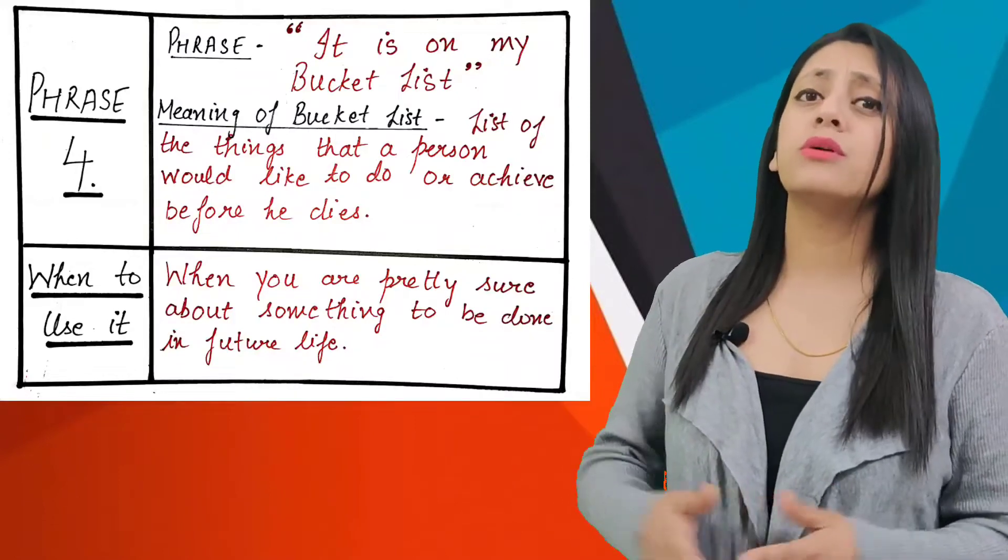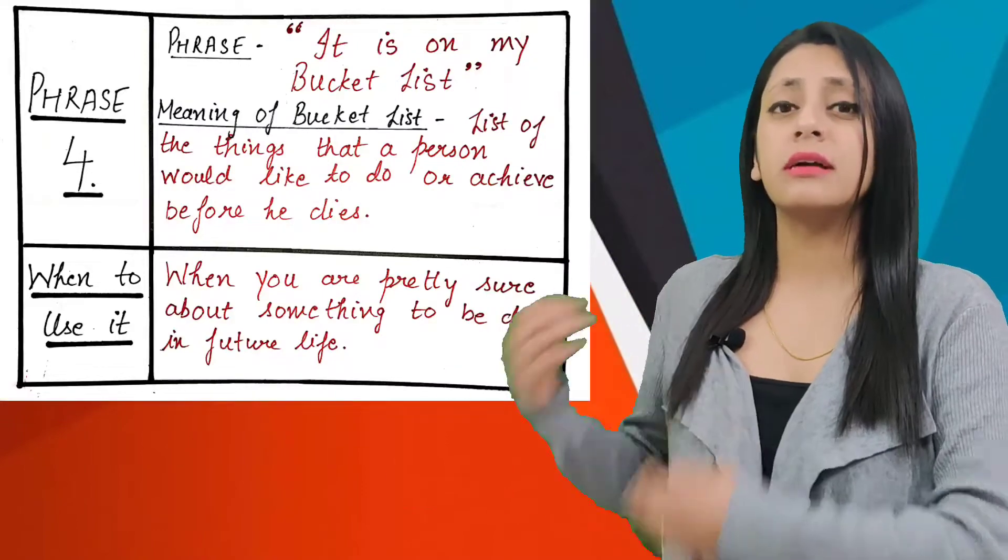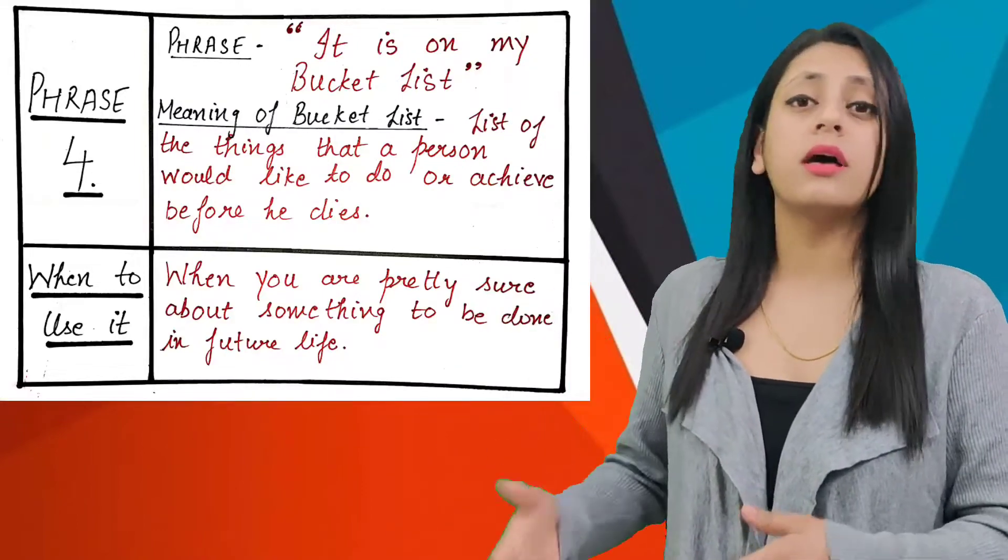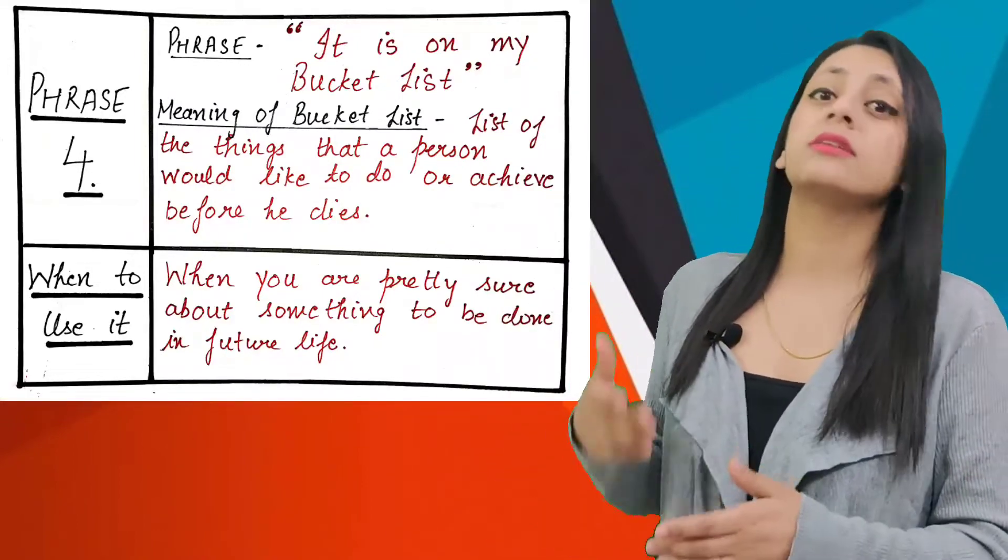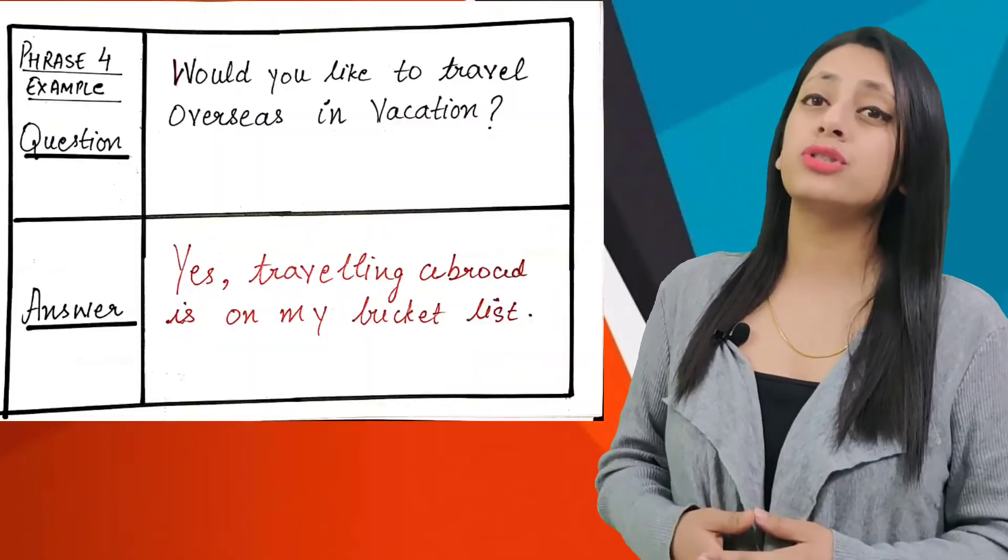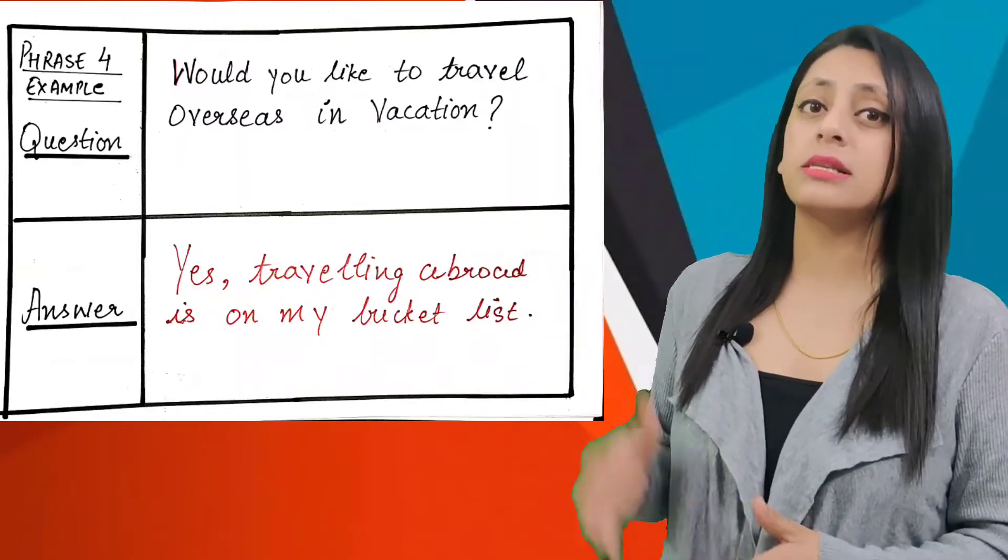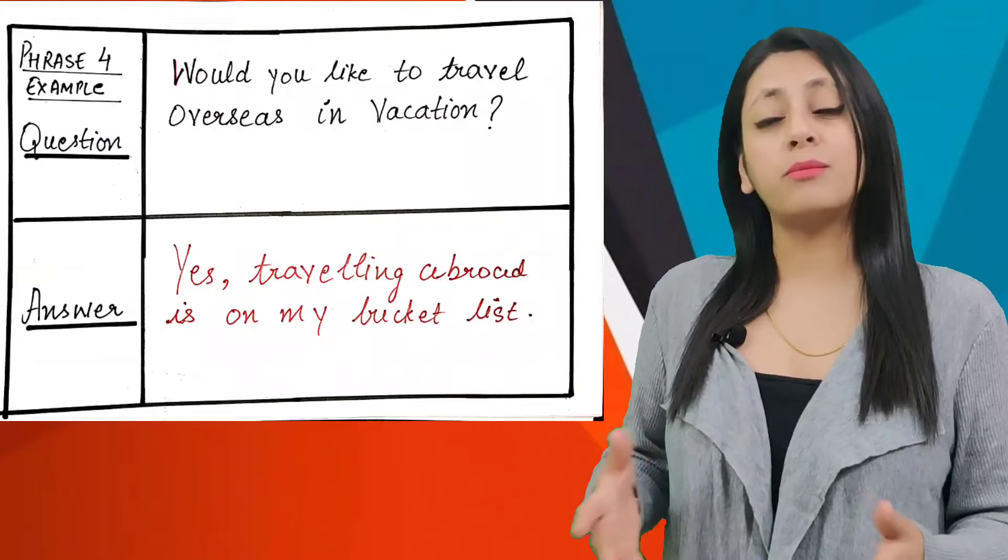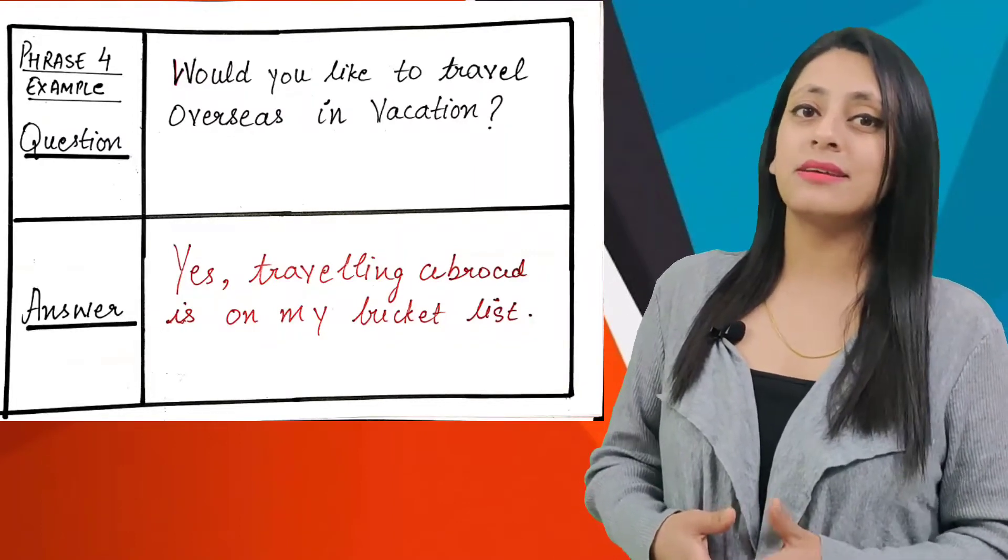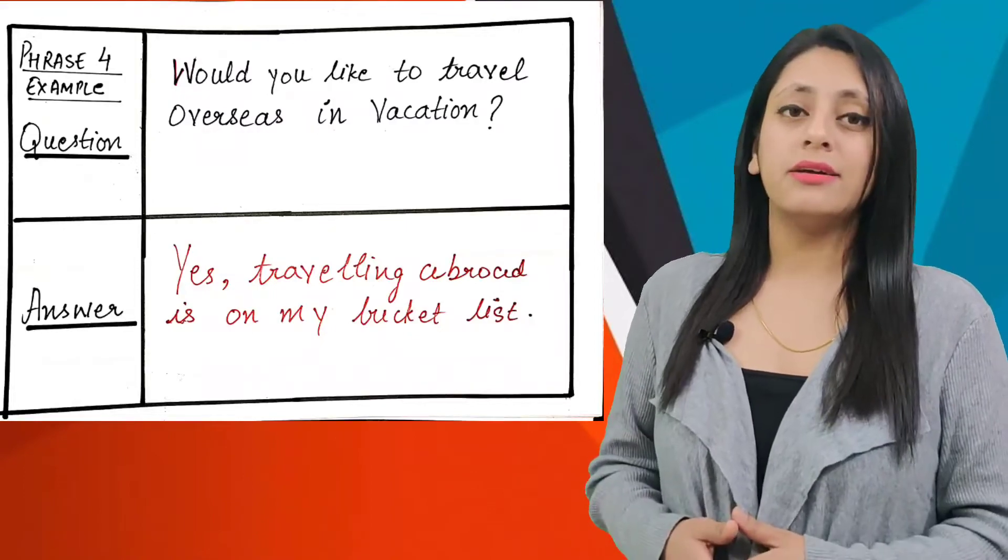When and how to use this phrase? When you are pretty much sure about something to be done in future life. For example, if the examiner asks would you like to travel overseas in vacations, you can begin your answer like: Yes, travelling abroad is on my bucket list. It means I have to go abroad at least once in my life.